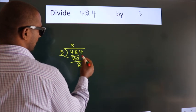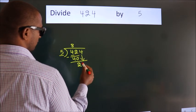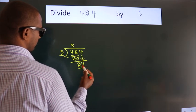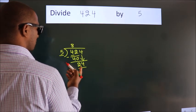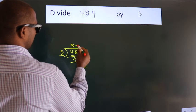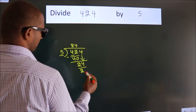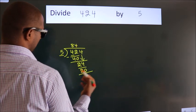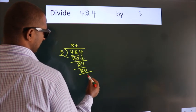After this, bring down the beside number. So, 4 down, making 24. A number close to 24 in the 5 table is 5 times 4 equals 20. Now we subtract. We get 4.